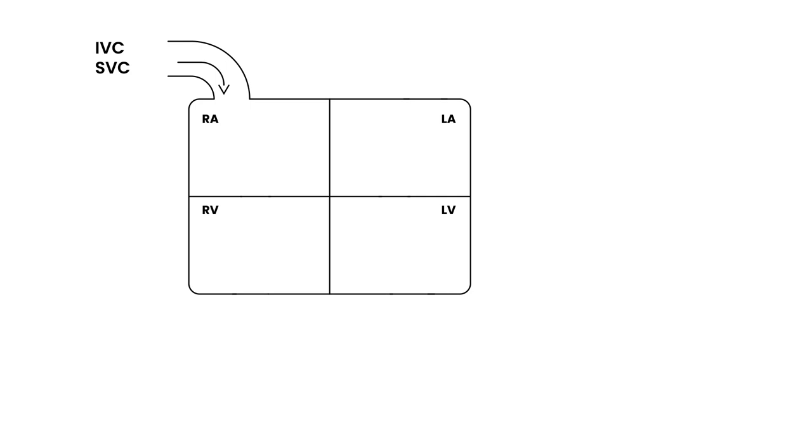Then you have some valves, and then you have coming out here the pulmonary artery. Patent ductus arteriosus involves a connection between the pulmonary artery and something else. In particular, it's the left pulmonary artery.